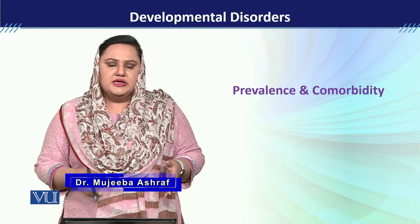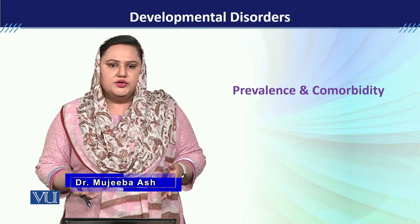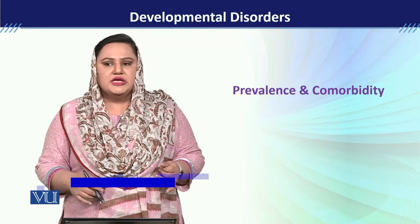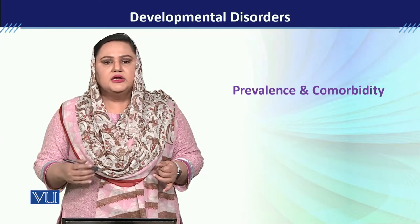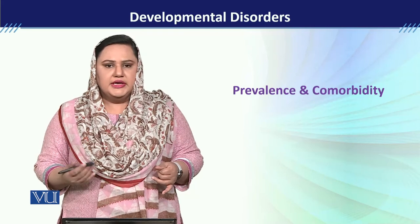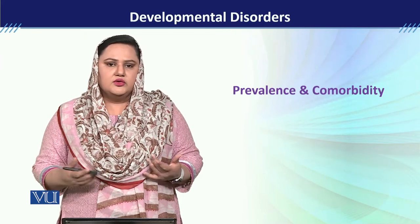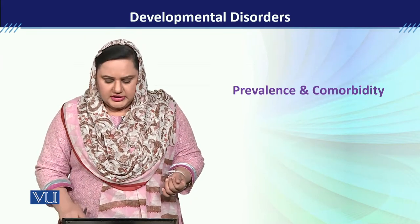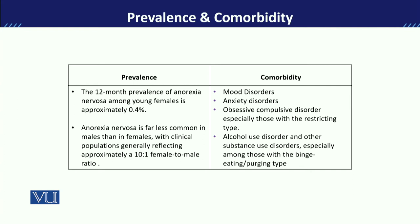Co-morbidity is important to understand so that we can know what is happening when a disorder is present — what the management looks like, how we can address it, and what the possible causes are. The first topic is prevalence. Looking at 12-month prevalence, Anorexia Nervosa in young females is reported at 0.4%.